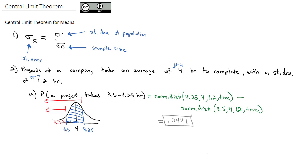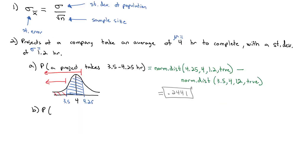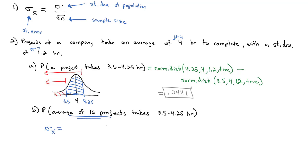So the probability that a single project takes between 3.5 and 4.25 hours is about 0.2441 — a little less than 25%. Now, if I change the problem slightly and ask: what is the probability that the average of 16 projects takes between 3.5 and 4.25 hours? That's going to change things, because now we're going to change the standard deviation into the standard error, because we have an average of 16 projects.